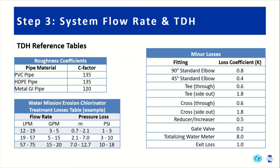These helpful reference tables include factors and coefficients used when calculating TDH. Based on your pipe material, you have different roughness coefficients or C factors, which affect your friction and minor losses. The minor losses table lists various fittings with different loss coefficients. You may also have a table from a manufacturer of water treatment equipment describing the pressure loss through the treatment system.